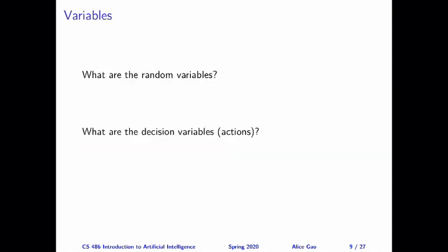To model the story using a decision network, we have to first come up with the variables. There are two kinds: the first type are random variables — these are events we have no control over, happening or not depending on some predefined rule defined by nature. The other type are decision variables, which are actually under our control; we can decide what action to take. Decision variables also represent actions.